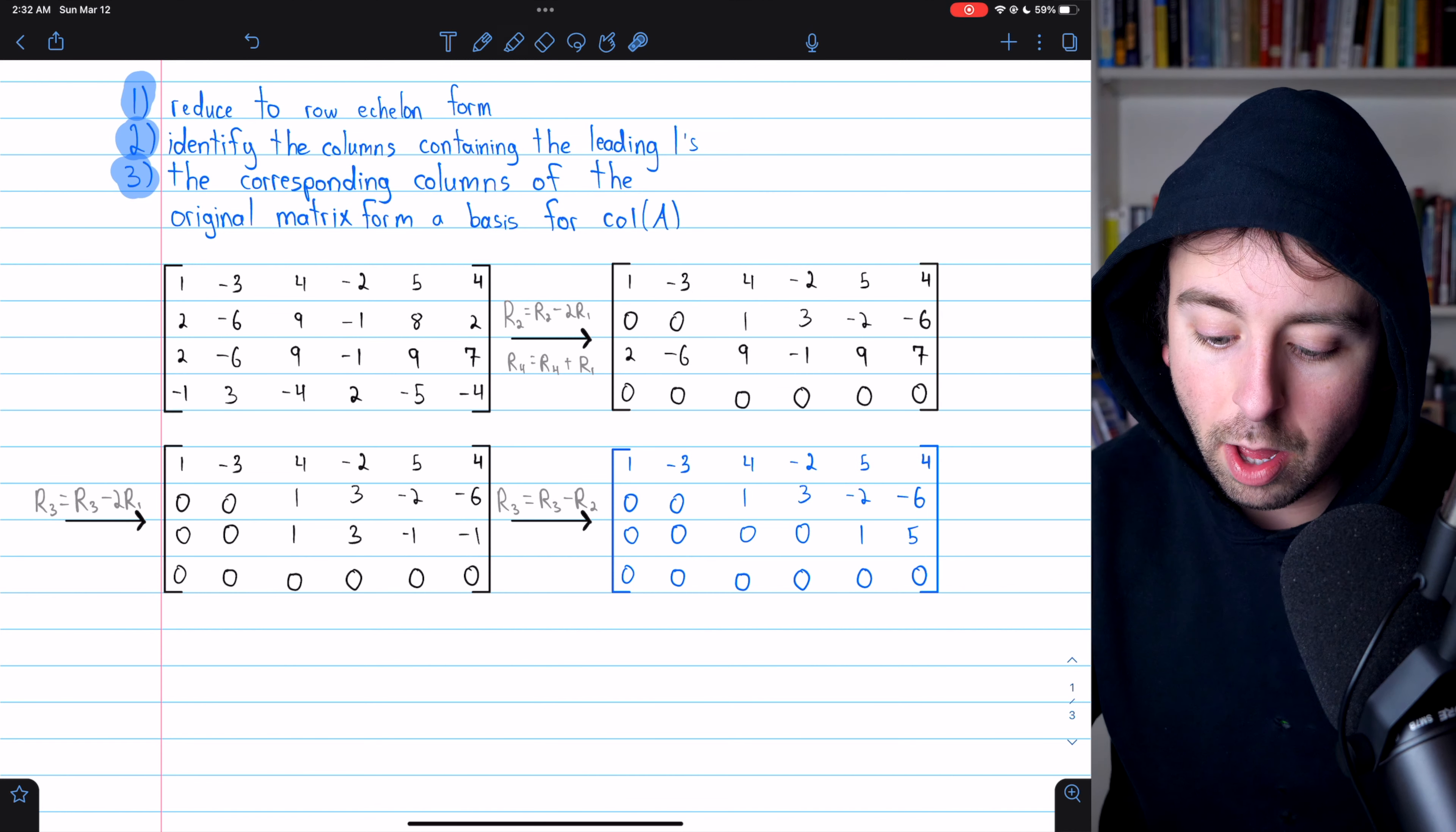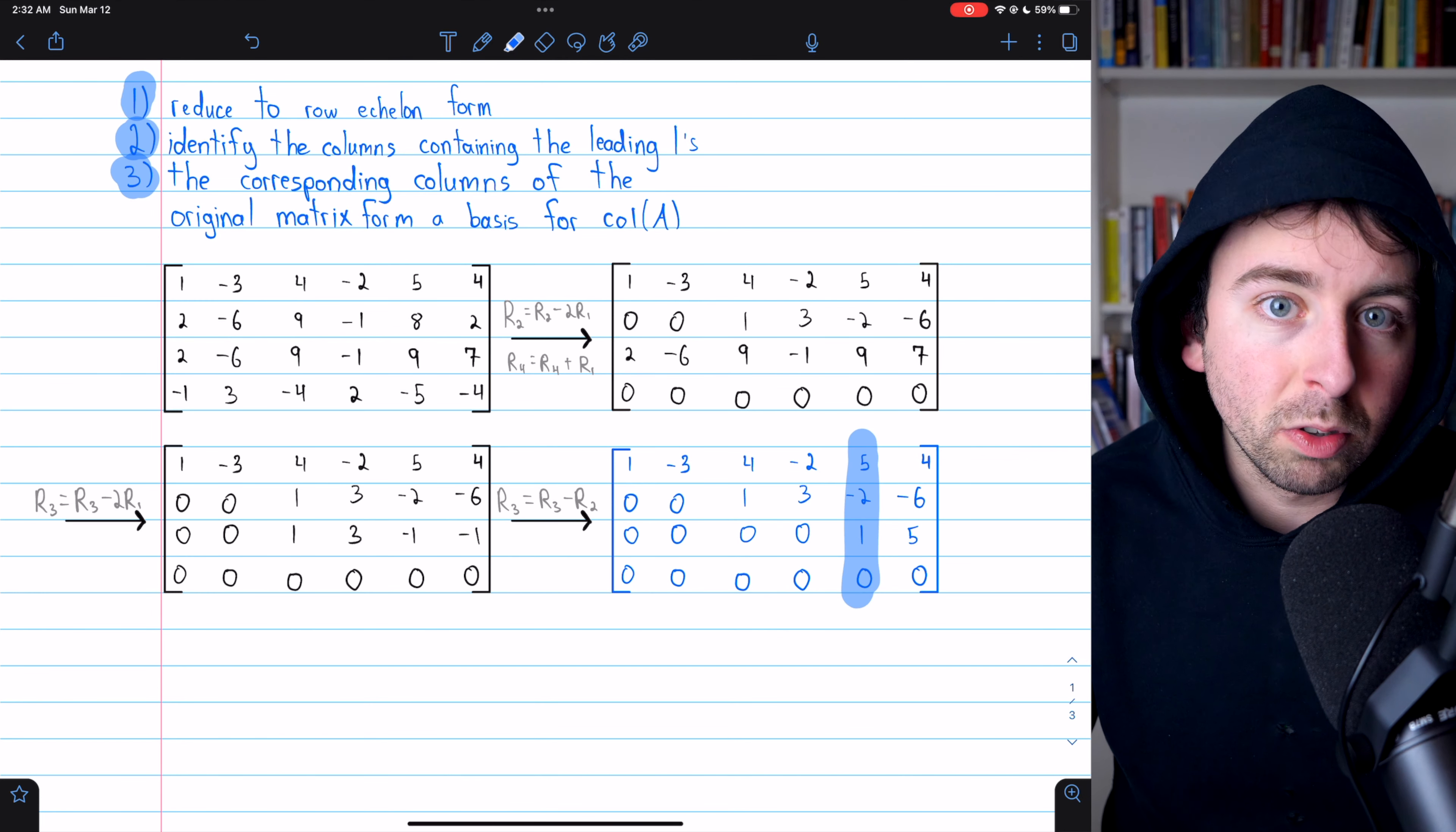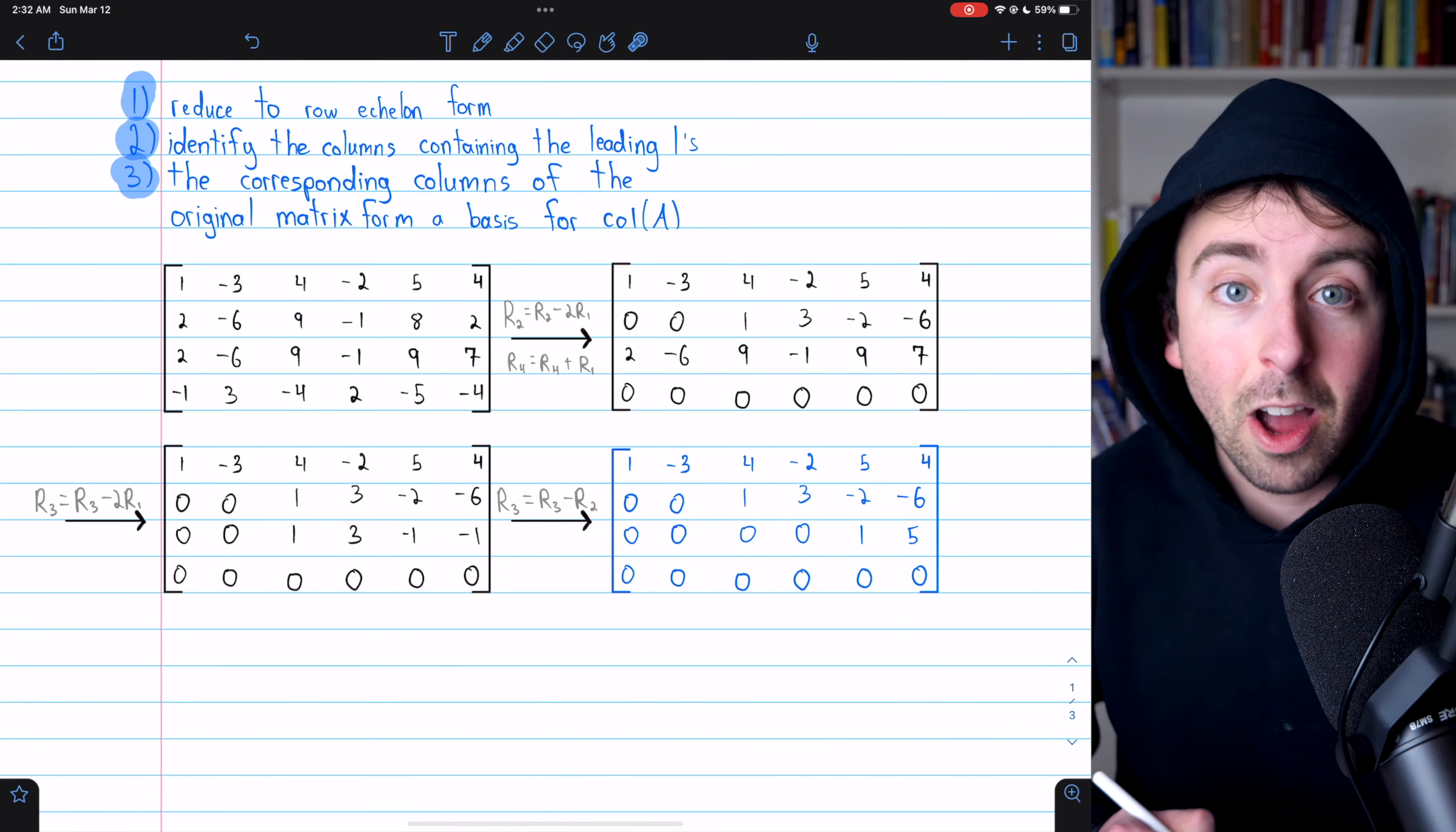It's not reduced row echelon form, like this leading one isn't in a column of all zeros, which would be necessary for it to be reduced row echelon form. But we don't need reduced row echelon form to find a basis for the column space. So we can stop there.